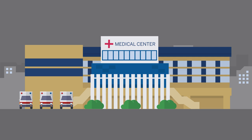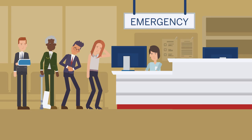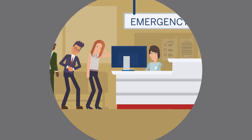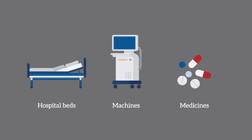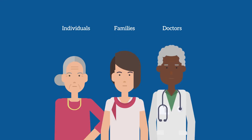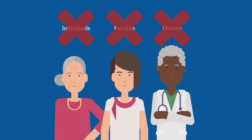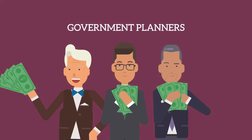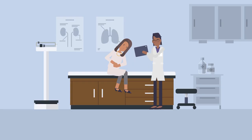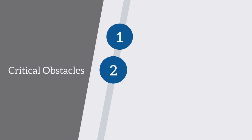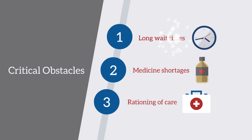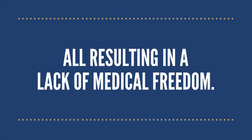For example, a truly socialist healthcare system forces decisions about the use of scarce resources — like hospital beds, machines, and medicines — to be decided not by individuals, families, or doctors, but by government planners. While patients of socialist healthcare may not have to pay to visit the doctor, they may face other critical obstacles, like long wait times, medicine shortages, and rationing of care, all resulting in a lack of medical freedom.